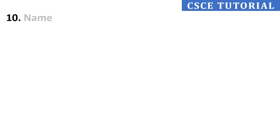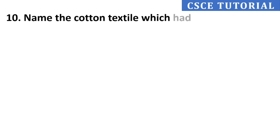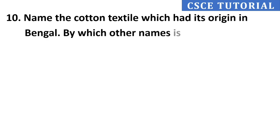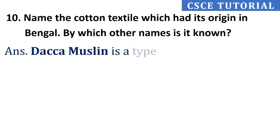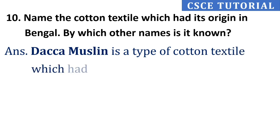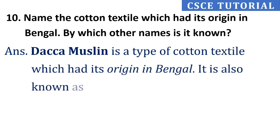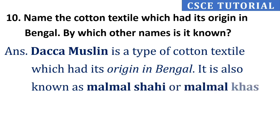Tenth question: Name the cotton textile which had its origin in Bengal. By which other names is it known? Its answer is, Dacca muslin is a type of cotton textile which had its origin in Bengal. It is also known as Malmal Shahi or Malmal Khas.